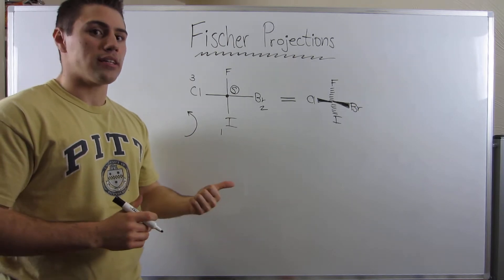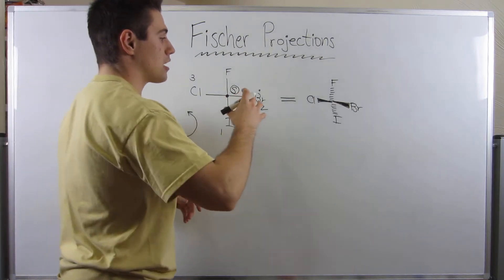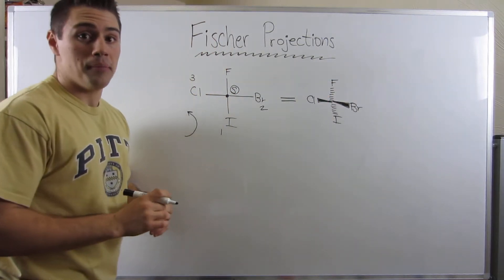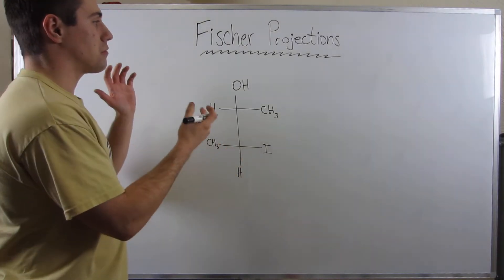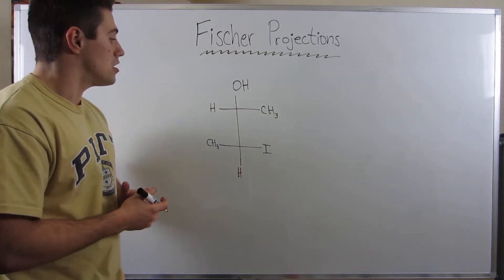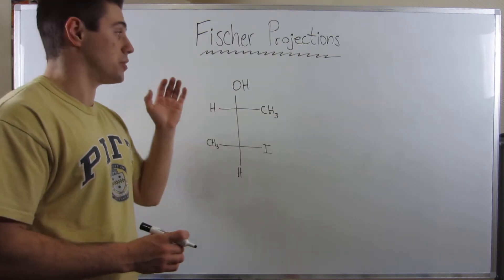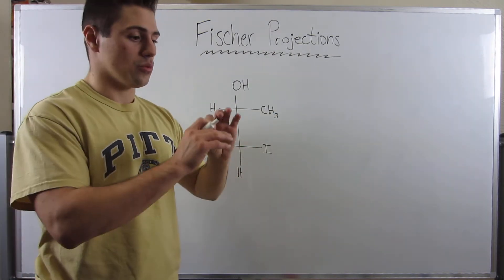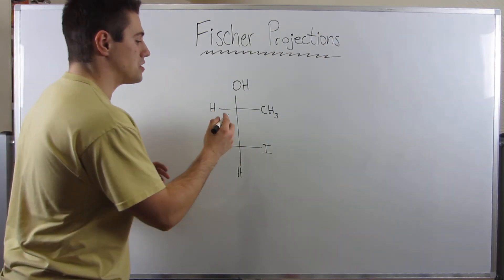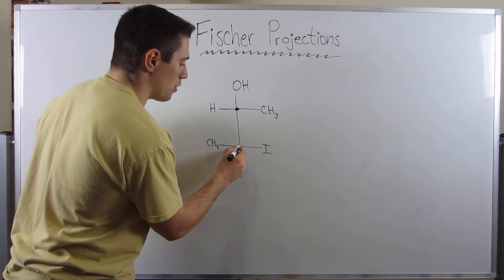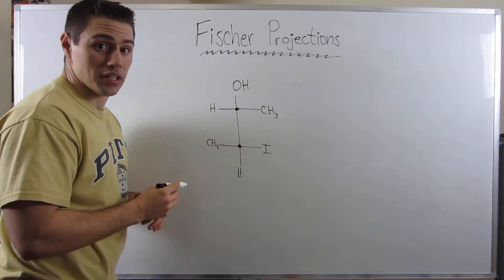Let's do one quick example. I want to talk about how you convert between Fischer Projection to Bond Line, because I do have that on the worksheet for Fischer Projections. Here's a random Fischer Projection I cooked up. We have a stereocenter at this carbon as well as this carbon, because we have four different groups attached here as well as down here.